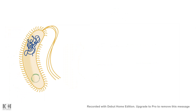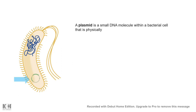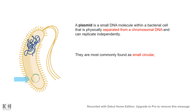In this video we'll talk about plasmid and its features as a cloning vector. A plasmid is extrachromosomal DNA — separate from the bacterial chromosome — which generally encodes for antibiotic resistance.